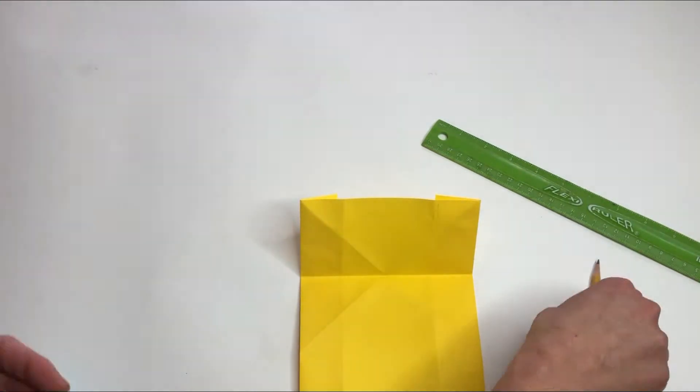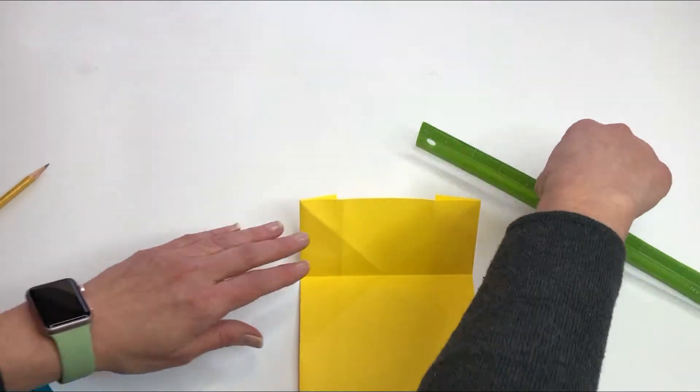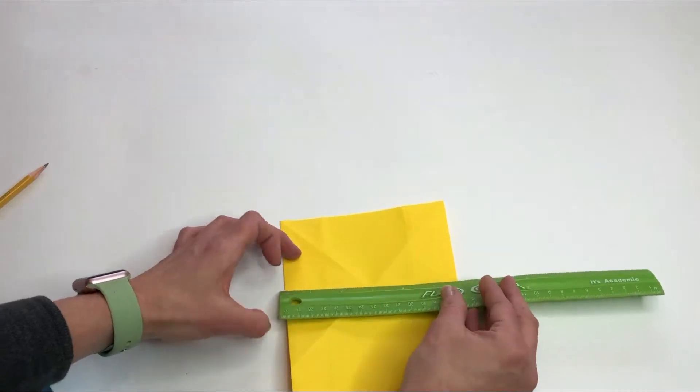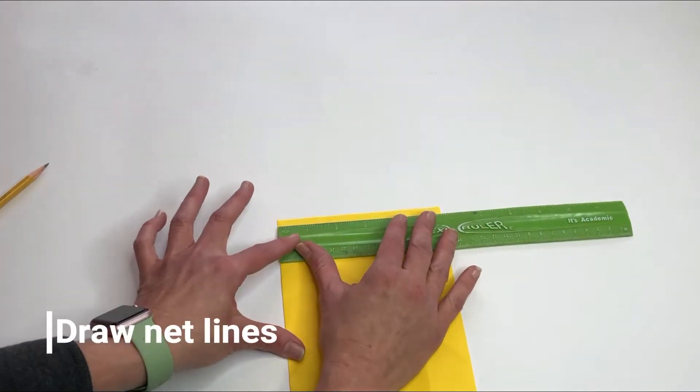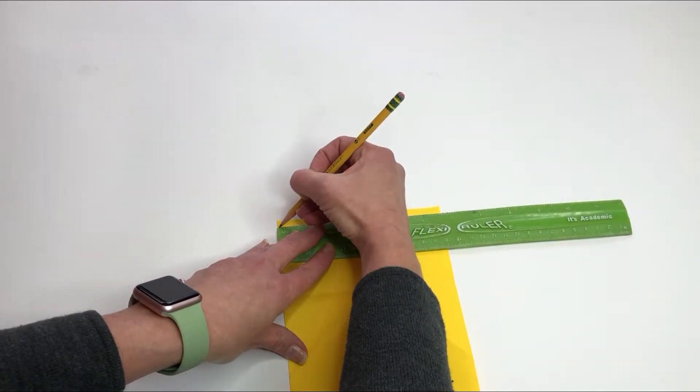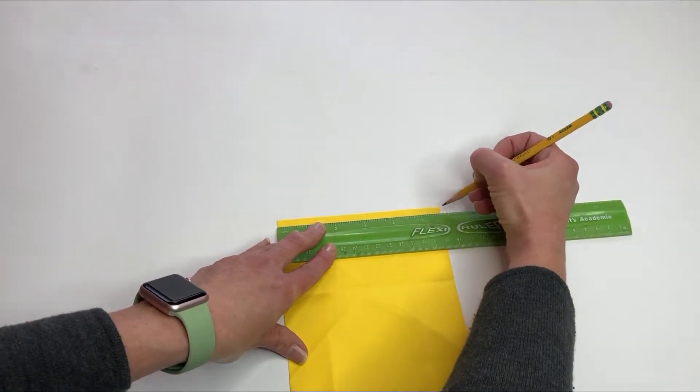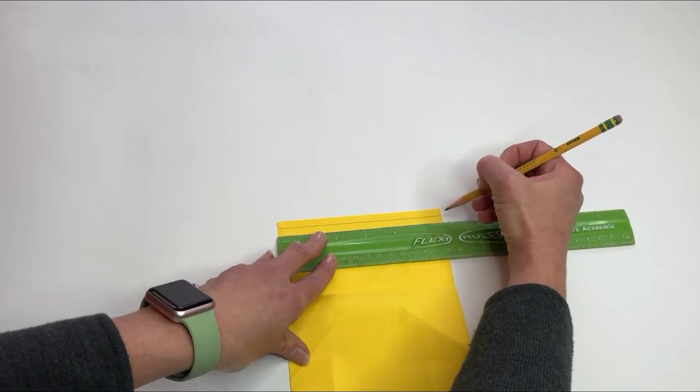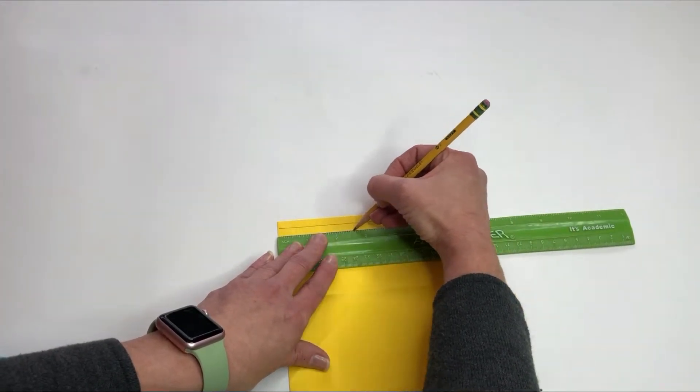This part's optional, but if you want to make it look like a net of a basketball hoop, you can draw crisscross lines on here. You don't have to be exact. Just kind of eyeball it.